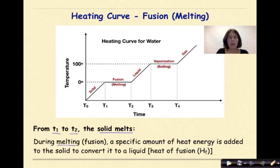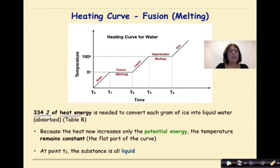During melting, which we also refer to as fusion, a specific amount of heat energy is added to the solid to convert it into a liquid. This is known as the heat of fusion and is represented as a capital H and a subscripted lowercase f. So from T1 to T2, we are going to see both a solid and a liquid exist during this time. 334 joules of heat energy is needed to convert each gram of ice into liquid water.